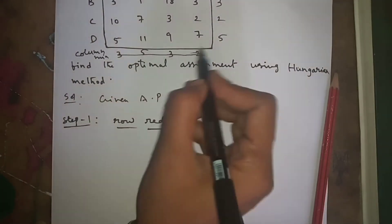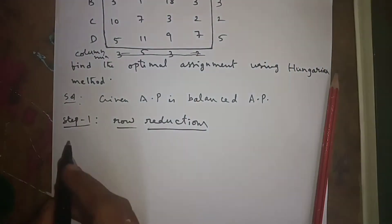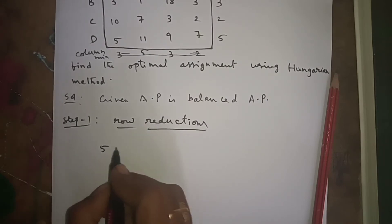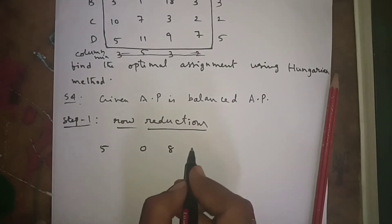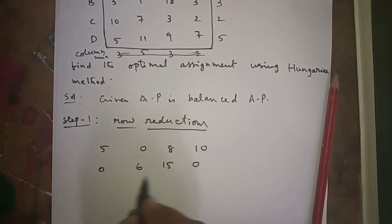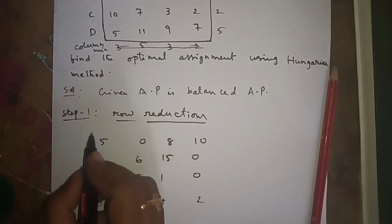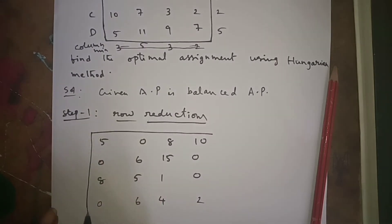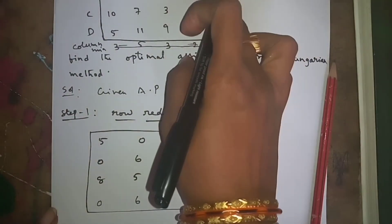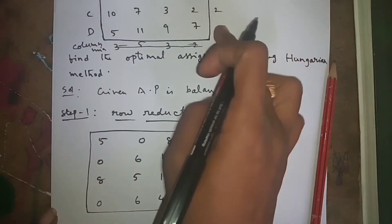First we will find the row minimum and subtract this minimum value from each row. Subtracting five from the first row, three from the second row, two from the third row, and five from the fourth row. After row reductions you get: first row: 5, 0, 8, 10; second row: 0, 6, 15, 0; third row: 8, 5, 1, 0; fourth row: 0, 6, 4, 2.